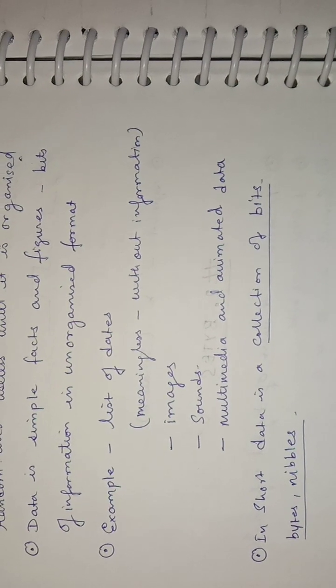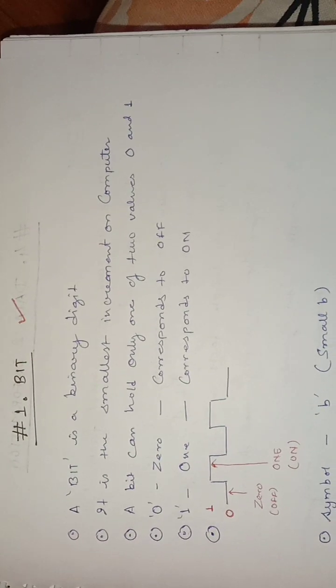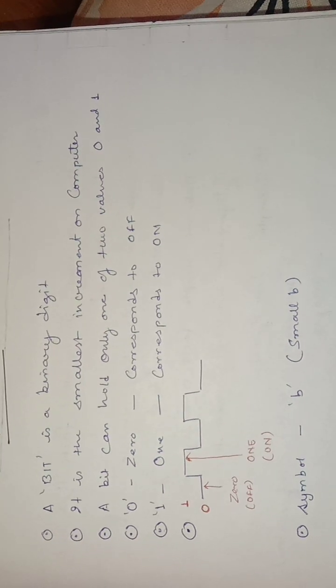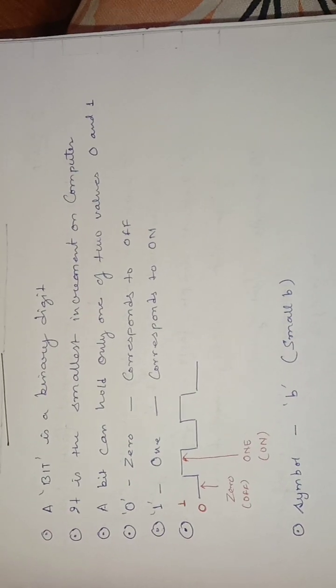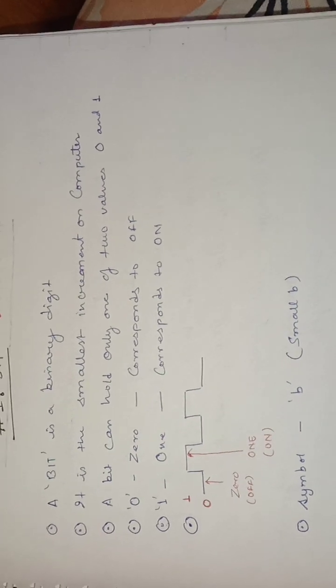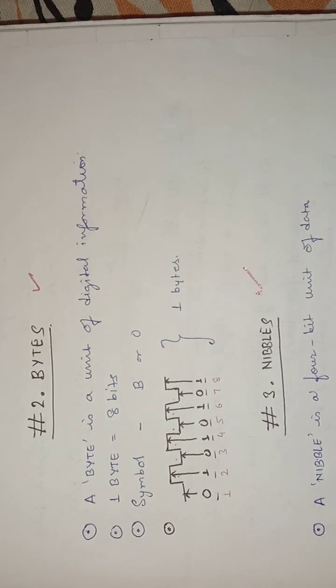Data is a collection of bits, bytes, and nibbles. A bit is a binary digit — it is the smallest unit on a computer. A bit can hold only one of two values: zero or one. Zero corresponds to the off condition and one corresponds to the on condition. You can see the signal going low and high — zero represents low or off, and one represents high or on. The symbol for bit is a small 'b'.